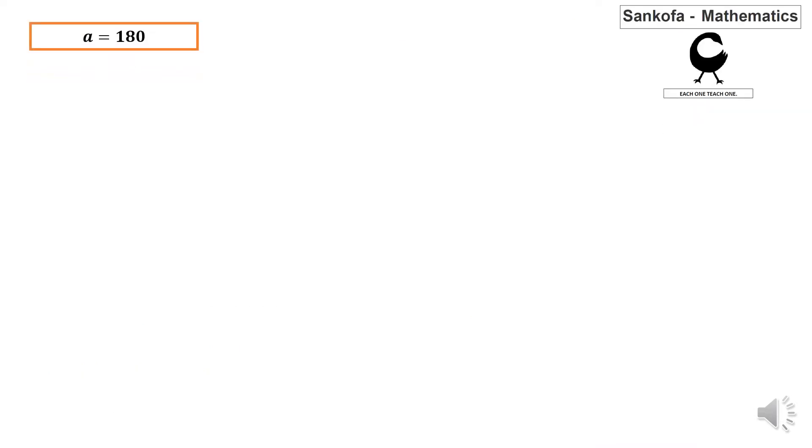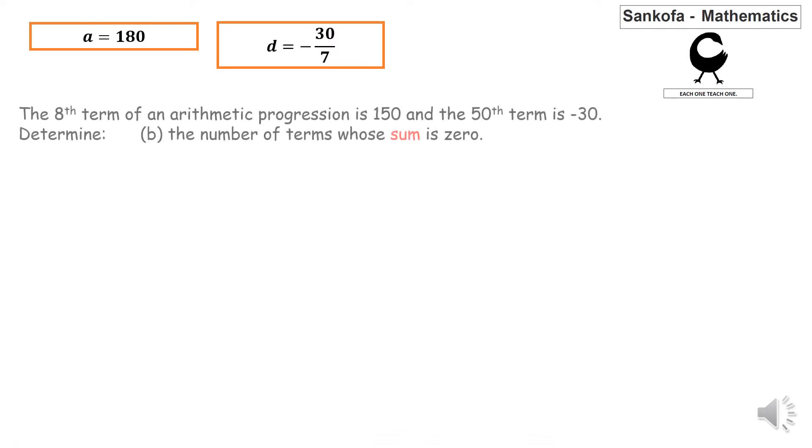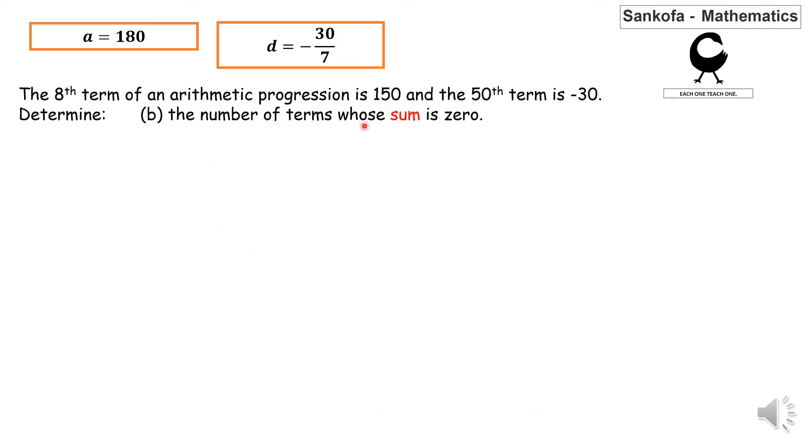Part b of this question. We're supposed to determine the number of terms whose sum is 0. S sub n comes into play here. The formula is S sub n equals n over 2 times 2a plus (n minus 1)d, and we know we're looking for the value of n that equals 0.